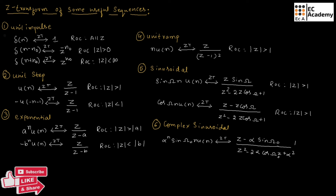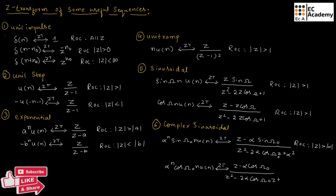Here ROC will be magnitude of Z greater than magnitude of alpha. And if we consider the function alpha to the power of n times cos(ω₀n) U of n, and perform Z-transform, we will get Z minus alpha cos omega naught, whole divided by Z squared minus 2 alpha cos omega naught times Z plus alpha squared.